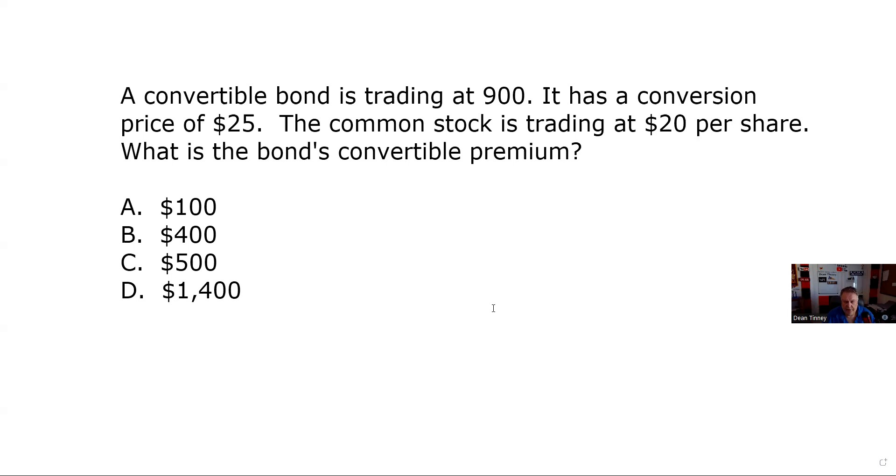A convertible bond is trading at 900. It has a conversion price of $25. So if you've been with me any length of time, you know that the minute you get the conversion price, you're going to have to get the conversion ratio.